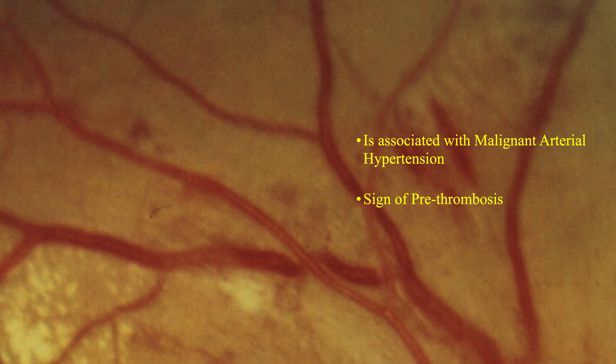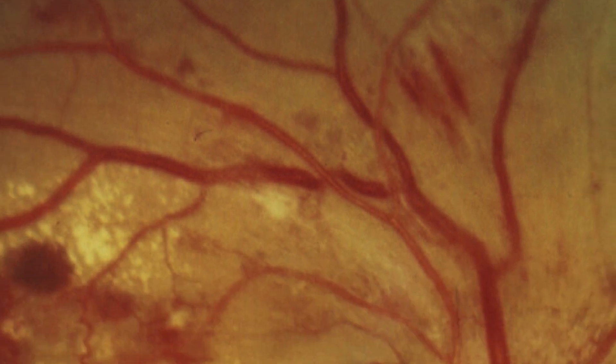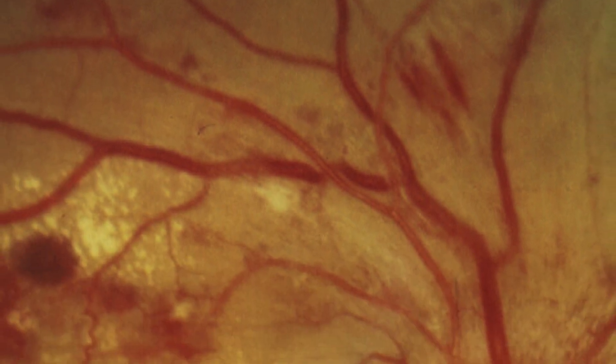Bonnet sign or Guntz sign grade 4 is associated with malignant arterial hypertension and is also considered a sign of prethrombosis. Thank you so much for your attention.